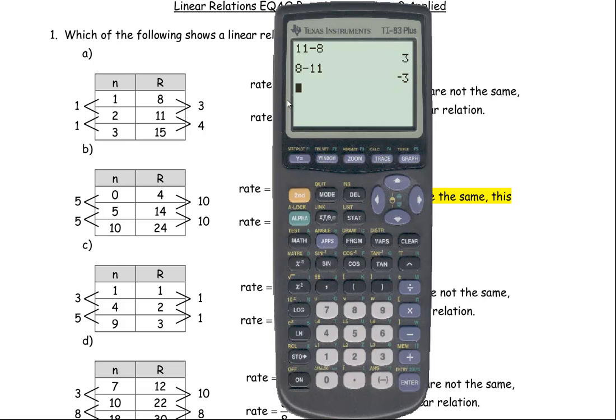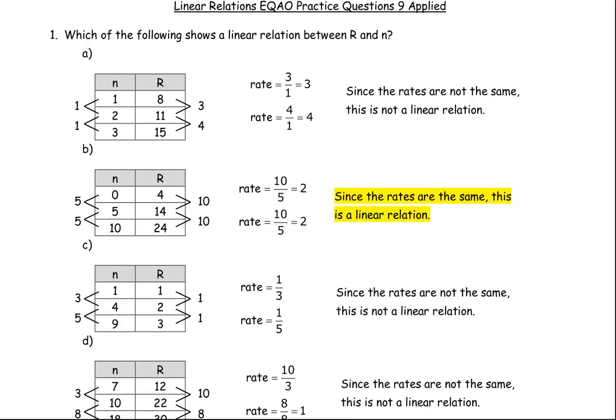From 8 to 11 it's going up 3, so 11 minus 8 is 3. 15 minus 11 is 4, so the change here is 4. In order to find the rate, remember rate is rise over run. These are the rises, these are the runs. So 3 over 1 would be the rate from the first ordered pair to the second, and then from 11 to 15 it goes up 4, so the rate here would be 4 over 1, and the rates change. So this one is not a linear relation. All the rest of them have a constant rate from ordered pair to ordered pair.